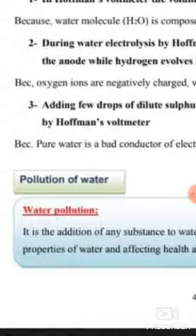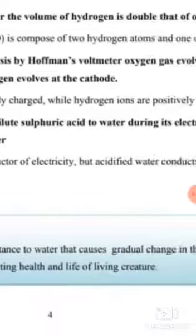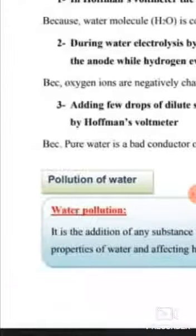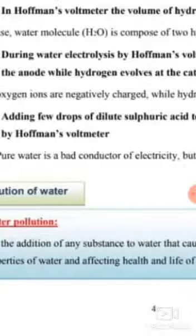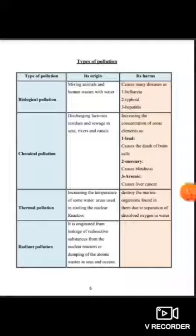Water pollution is the addition of any substance to water that causes gradual change in the properties of water and affects the health and life of living creatures. There are many types of pollution: biological pollution, chemical pollution, thermal pollution, and radiant pollution.